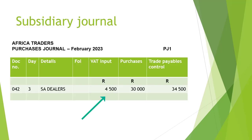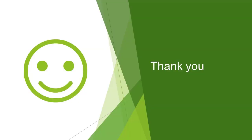The information in our Purchases Journal now corresponds to our invoice: document number 042, the day as the third, the details as SA Dealers — the supplier from whom we bought the inventory — VAT Input of R4,500, Purchases of R30,000, and Trade Payables Control of R34,500. After watching this short video, you should now be able to record a transaction in the Purchases Journal for a business using the periodic inventory system where the business purchased inventory on credit. Thank you for watching.